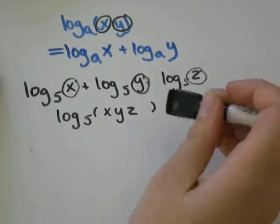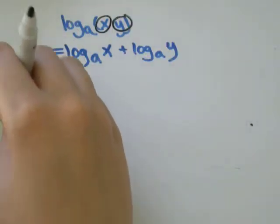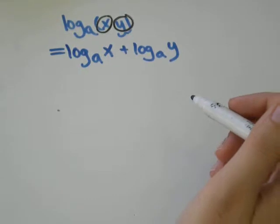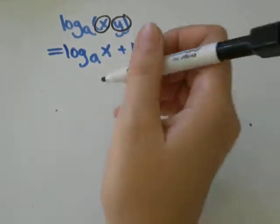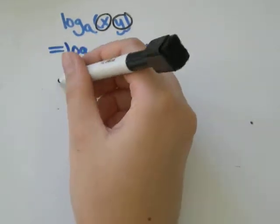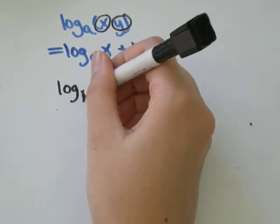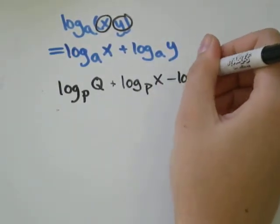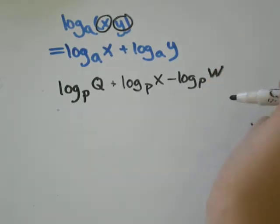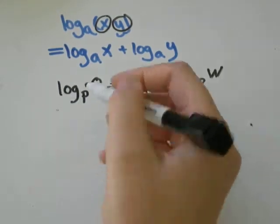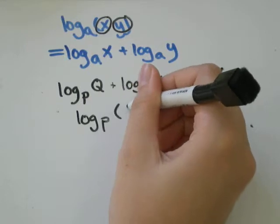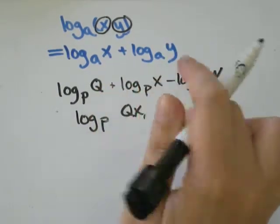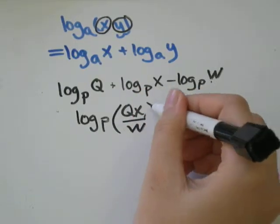You are also going to see questions where there's the product rule, the subtraction where we use subtraction to represent division, and the product rule shown by addition all at once. Now let's do one where you see also the division rule which is where you use subtraction. We had log base p of q plus log base p of x minus log base p of w. These two are being added, so there's our product rule: log base p of q times x. This one is being subtracted, that's our division rule. So the qx will be over w. You'll get log p of qx over w.